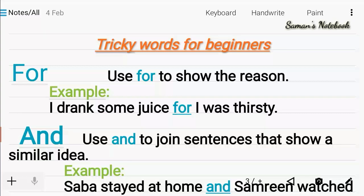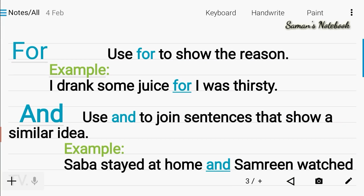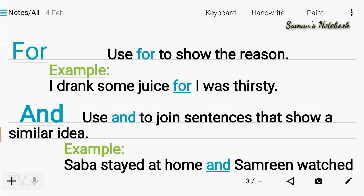Tricky words for beginners. Number one: For. Use 'for' to show the reason. Example: I drank some juice for I...